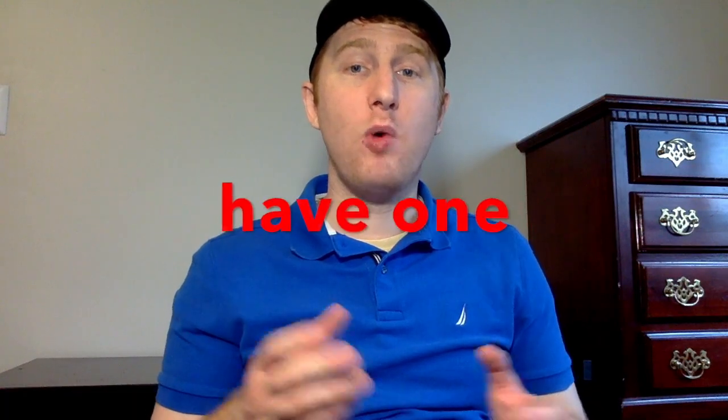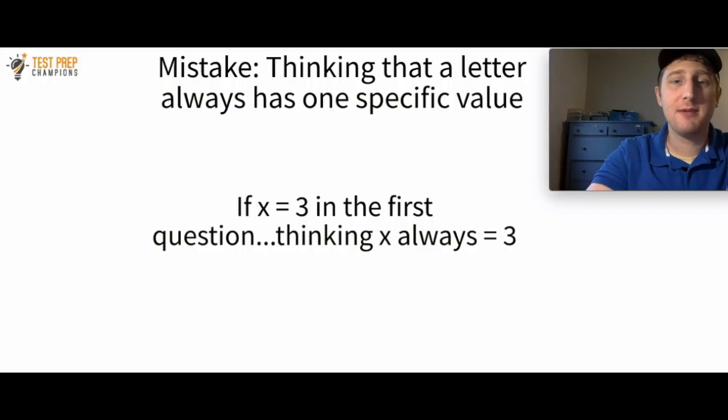Thinking that letters always have one specific value that they represent is another mistake that you don't want to do on your test. So for example, the test might tell you for, let's say the first question that X equals three. And the mistake would be thinking that X always equals three for every question for the rest of the test. That's a really, really fast way to fail.